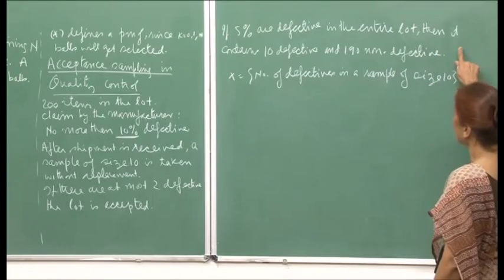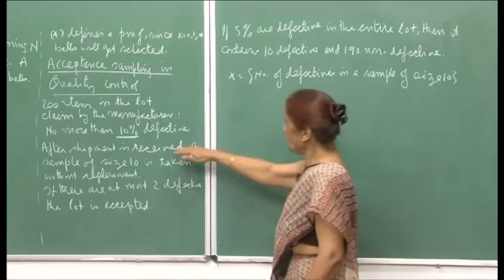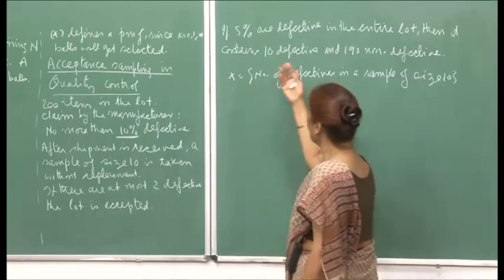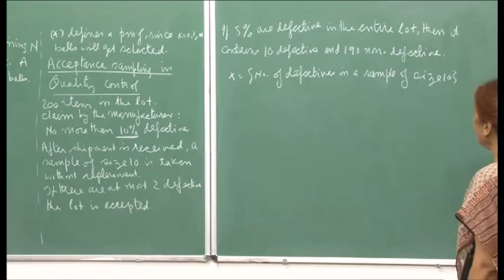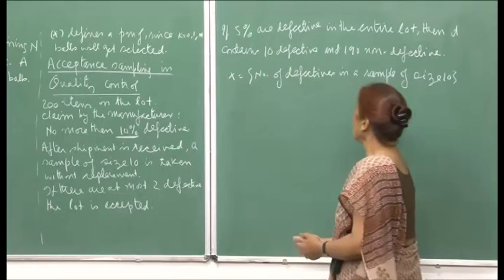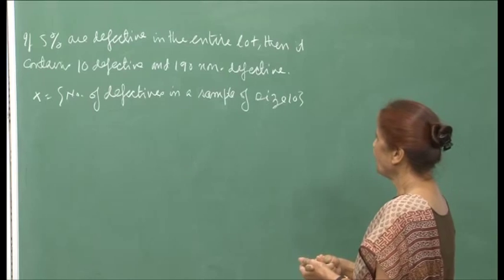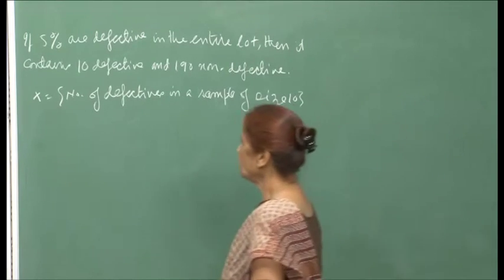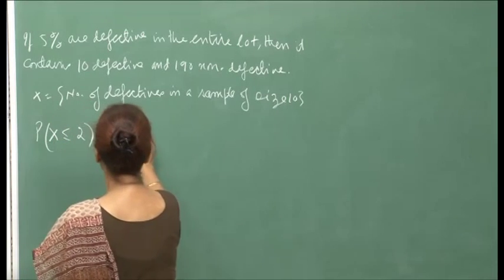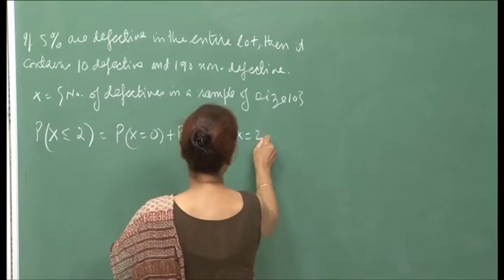If 5 percent are defective in the entire lot, then it contains 10 defective and 190 non-defective, because 5 percent of 200 is 10. If you want to compute the number of defectives x in a sample of size 10, you want to compute the probability that x is less than or equal to 2, which means probability x equals 0 plus probability x equals 1 plus probability x equals 2.